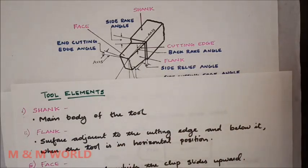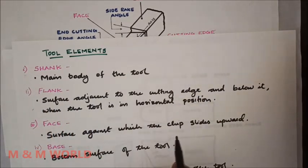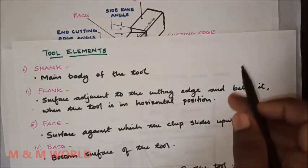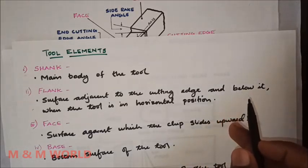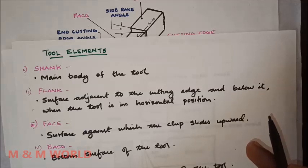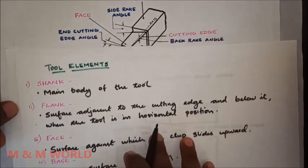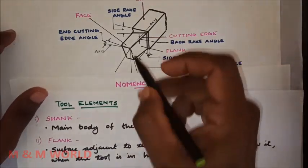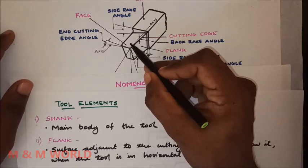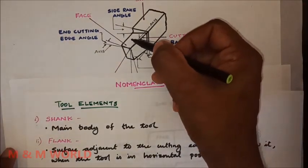The next element is the face. The face is the top surface of the tool on which the chip passes after cutting — it is the surface against which the chip slides upward. After cutting, the chip flows through the face.